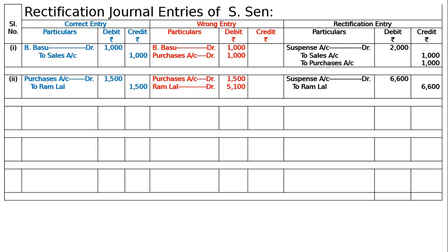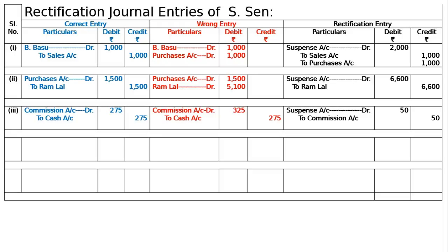Third entry: an amount of Rs.275 was posted as Rs.325 to the debit side of a commission account. The correct entry was commission to cash Rs.275, but it was debited to commission account as Rs.325. Commission account is excess debited by Rs.50; hence crediting by Rs.50 in the rectification entry will rectify it. All other accounts being correct, it goes to suspense account. Suspense account debited to commission account Rs.50 — excess debit to commission account by Rs.50 is rectified.